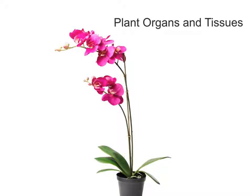Hello everyone. In this video I'm going to be talking through some plant organs and tissues. This is really meant as an introduction to the topic of photosynthesis done in the IGCSE specification for biology. What the specification requires you to know is just a few of the plant organs and the names of some of the plant tissues that you find. So we're just going to give a little overview to that.